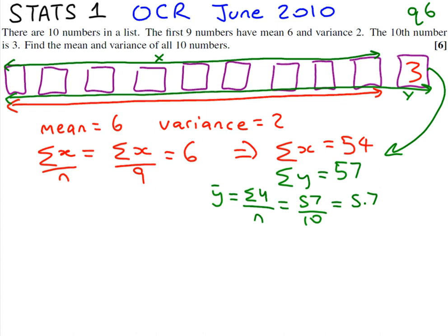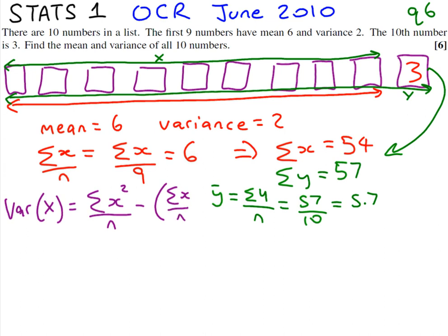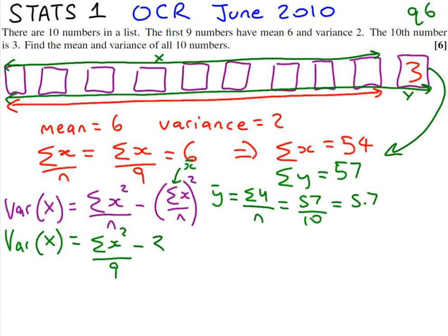The next bit, finding the variance, is a little bit more tricky. The formula for variance says that we find the sum of all the x-squareds over n, take away the sum of x over n, all squared. Remember, the sum of x over n is just x-bar. So the variance of x was the sum of all the x's squared over n — which was 9 numbers — take away 6 squared, which is 36, because the mean is 6.